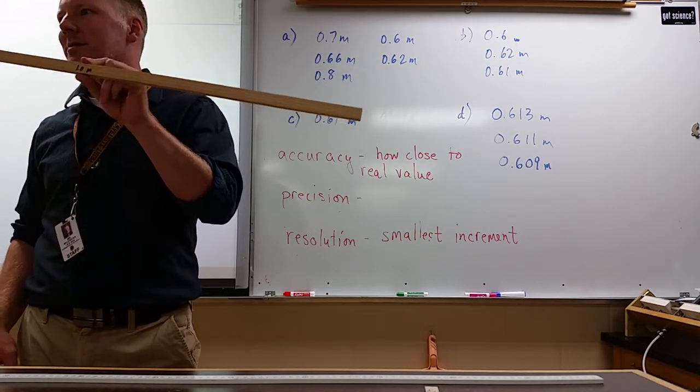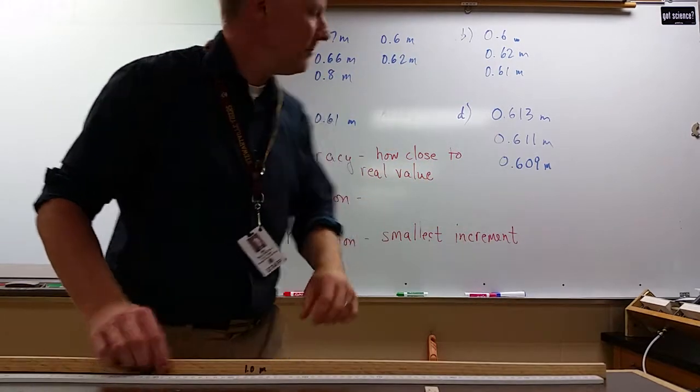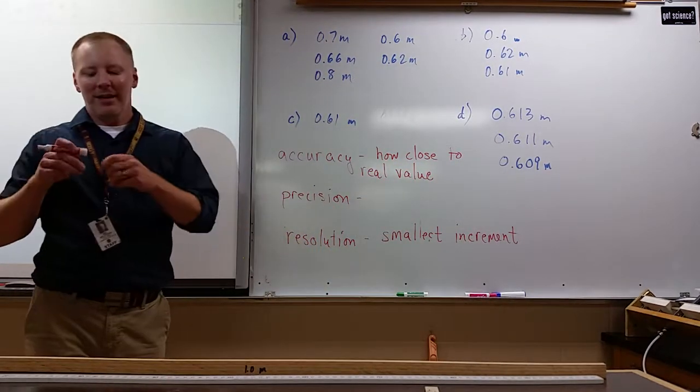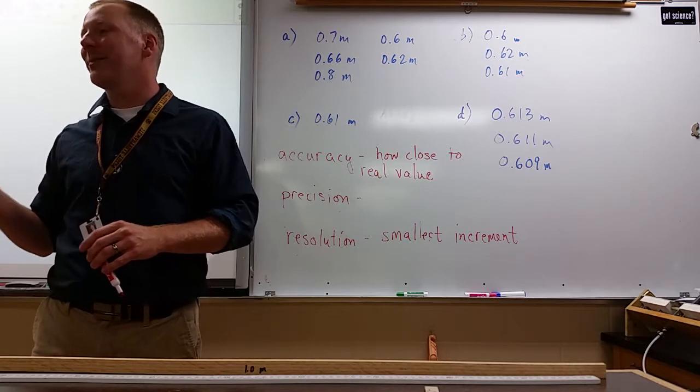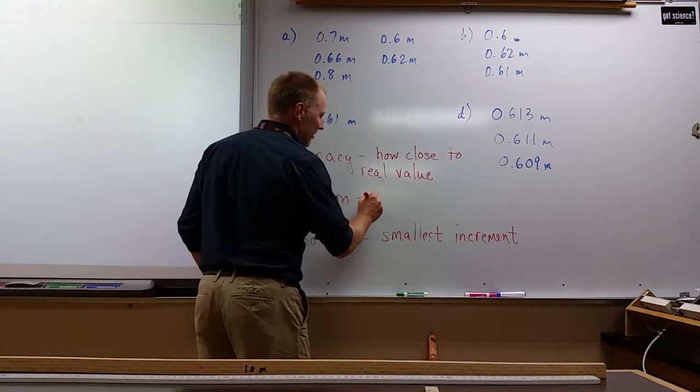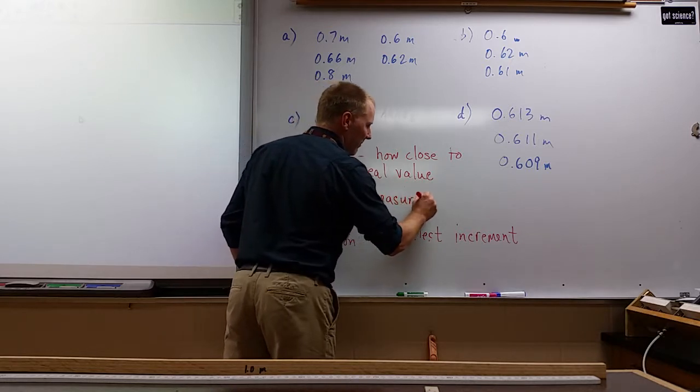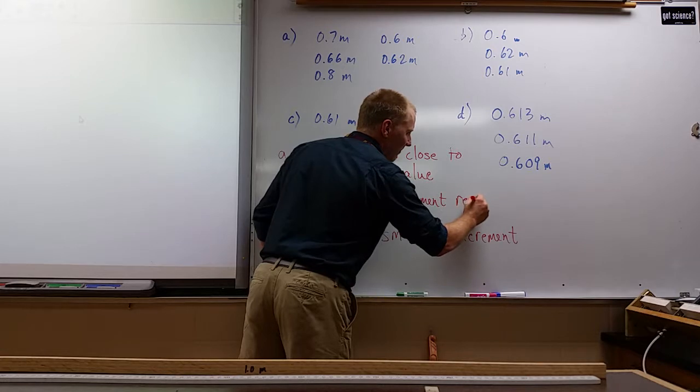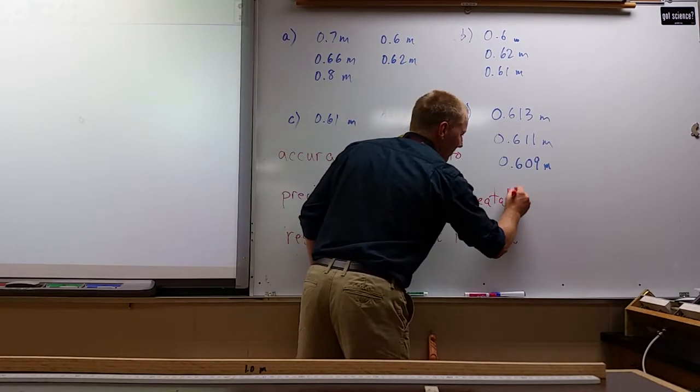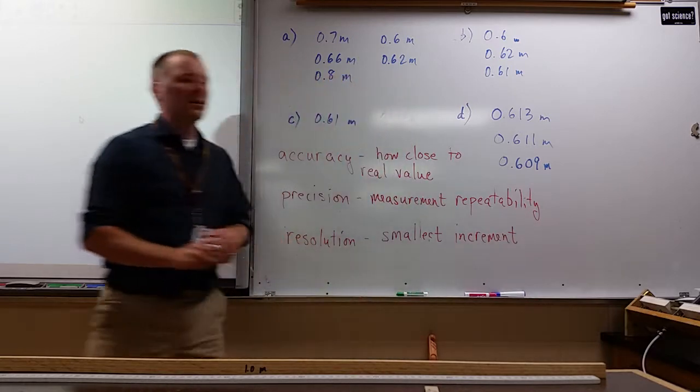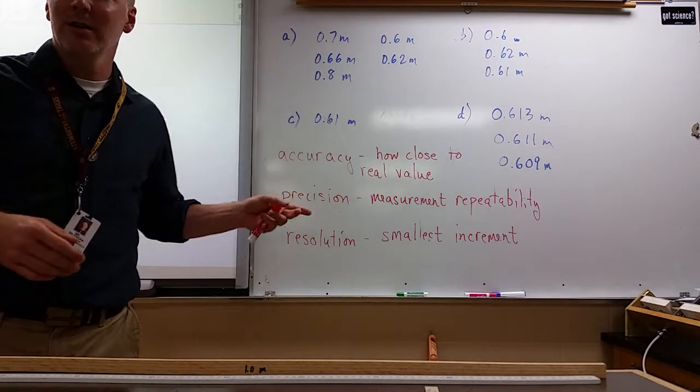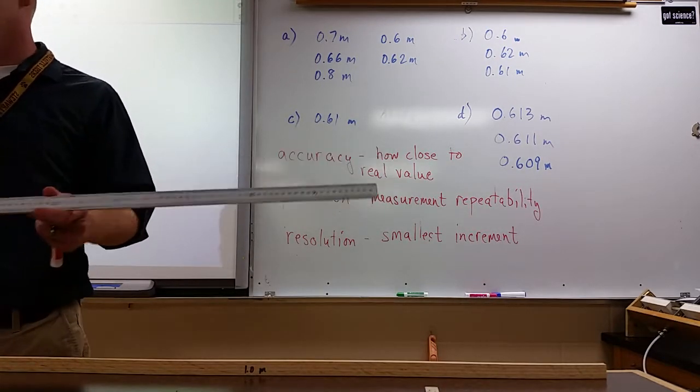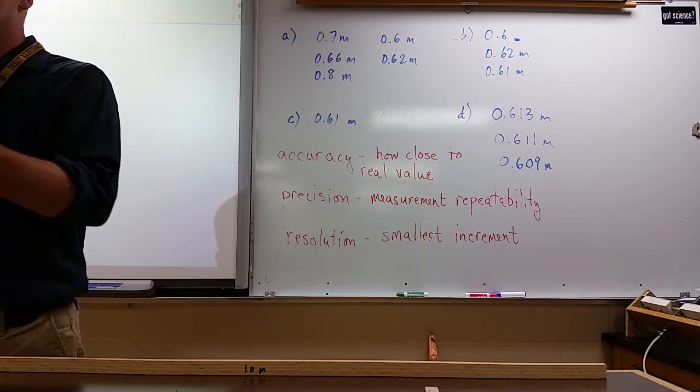Precision is related to how well can you repeat a measurement and get the same answer. So this is measurement repeatability. This could be from person to person. If they weren't lining it up with one edge in the same way, that would change our precision even though the measurement device doesn't change at all and its accuracy doesn't change. If you put it at an angle and didn't realize that, that would as well.